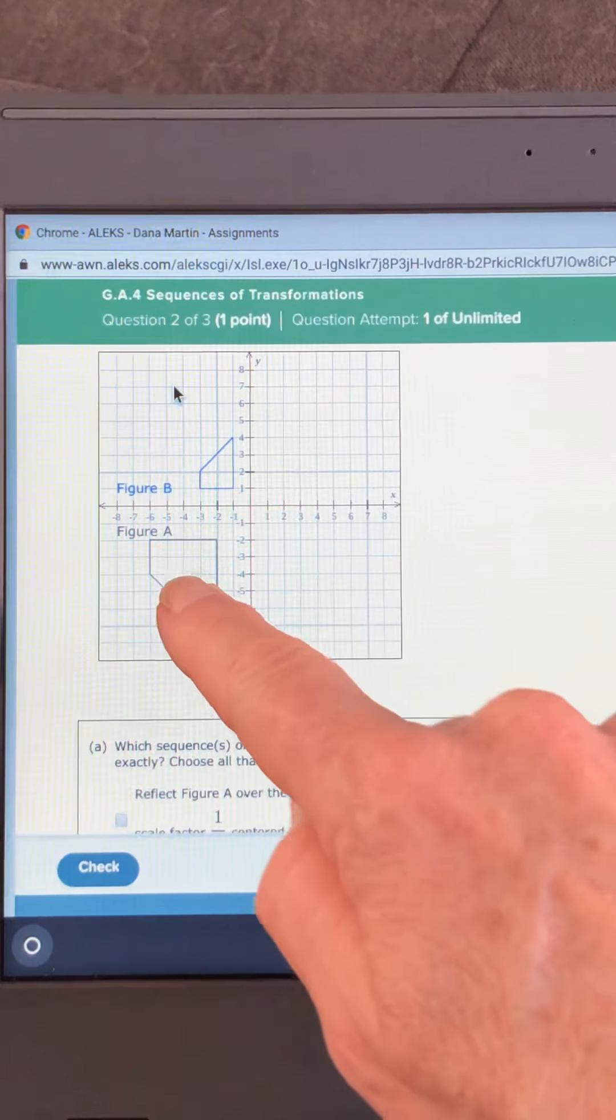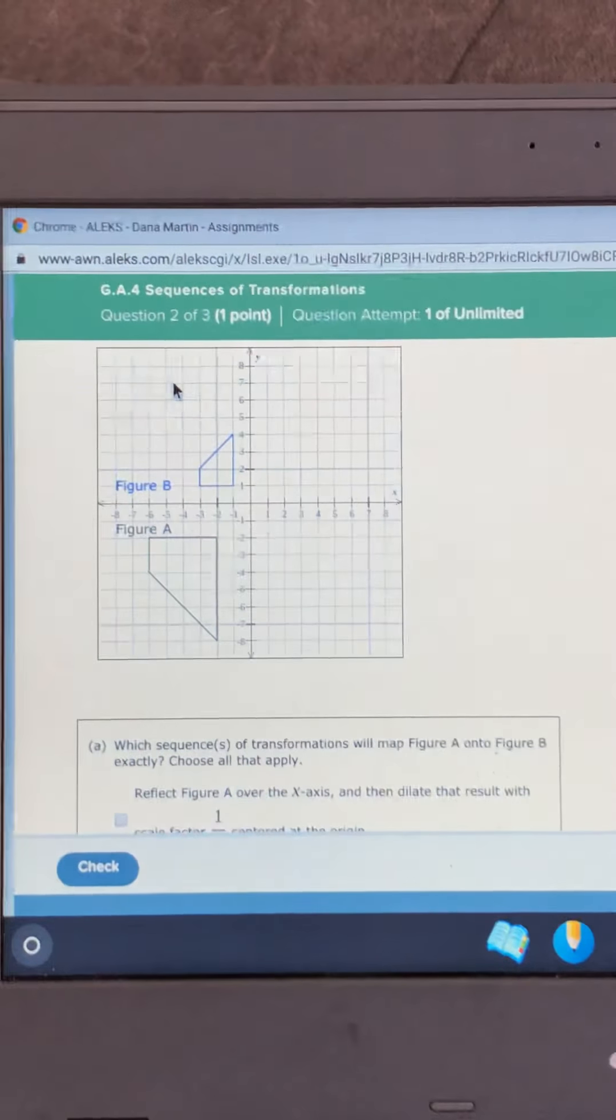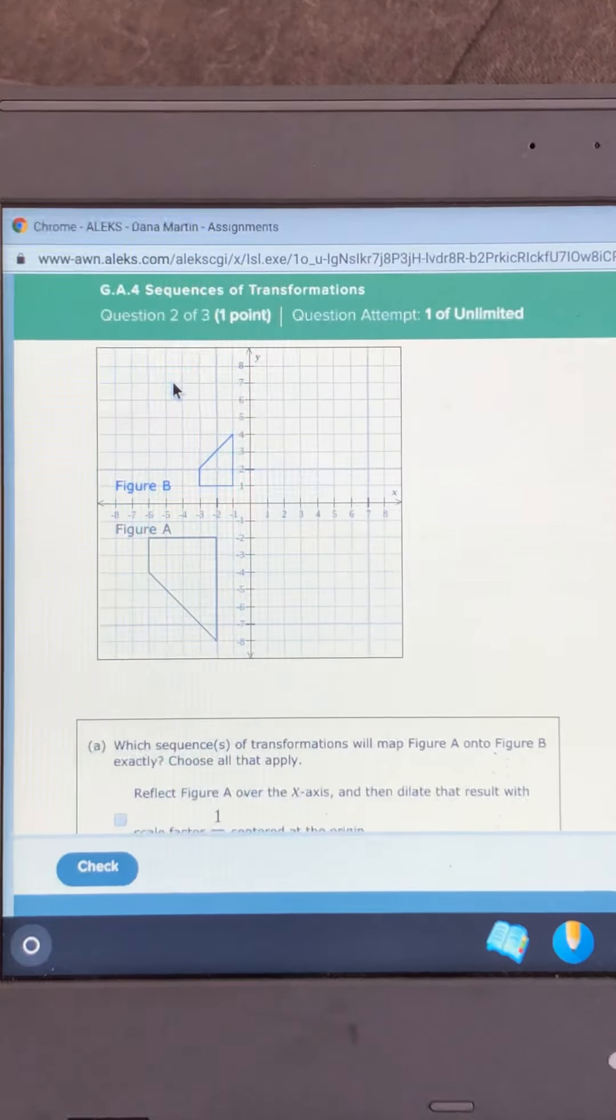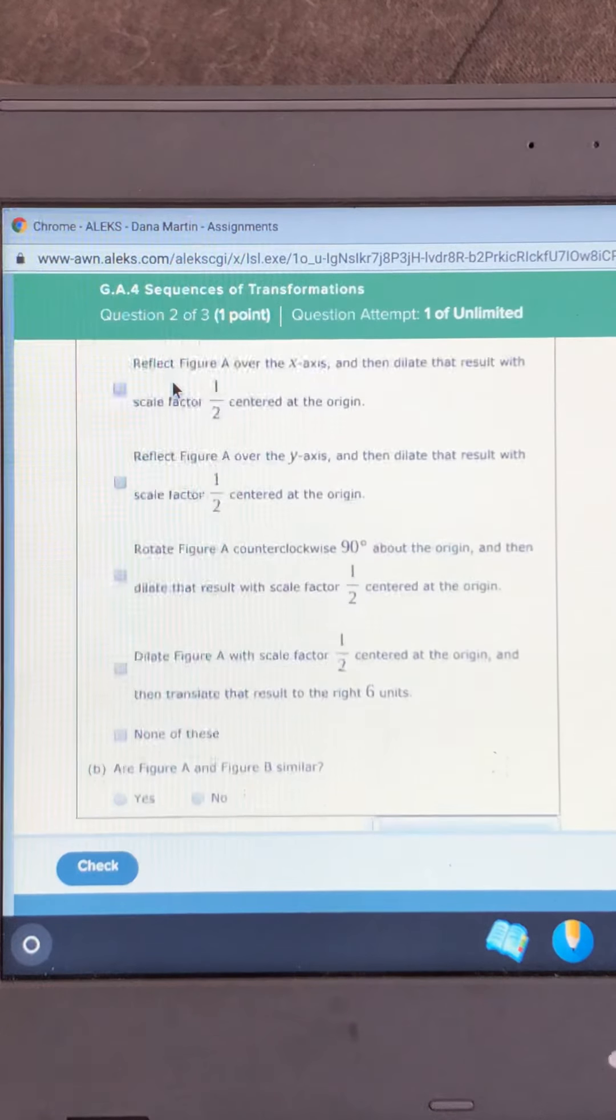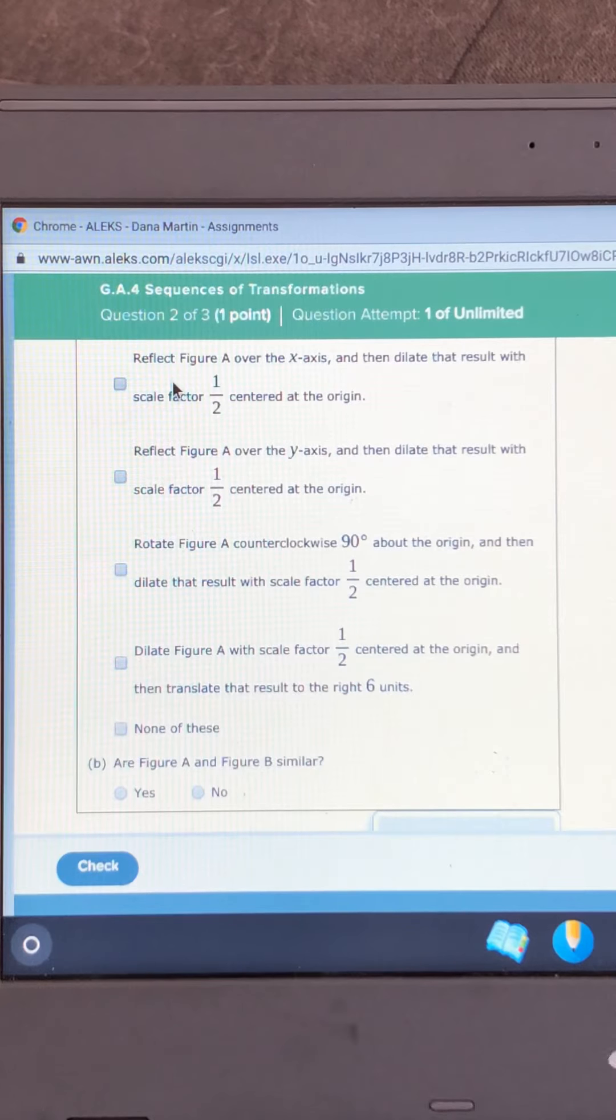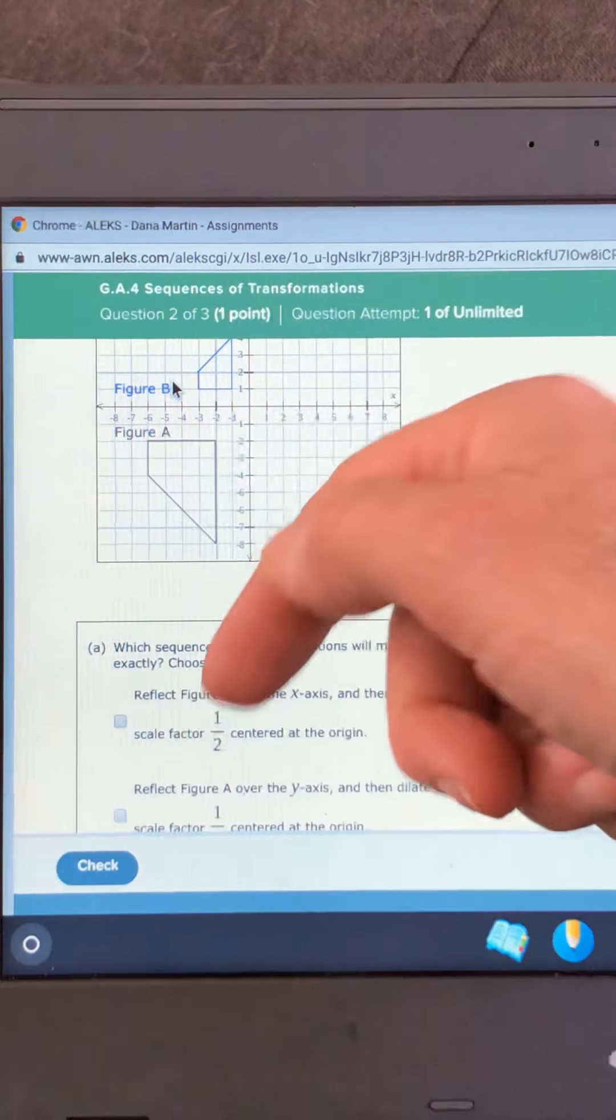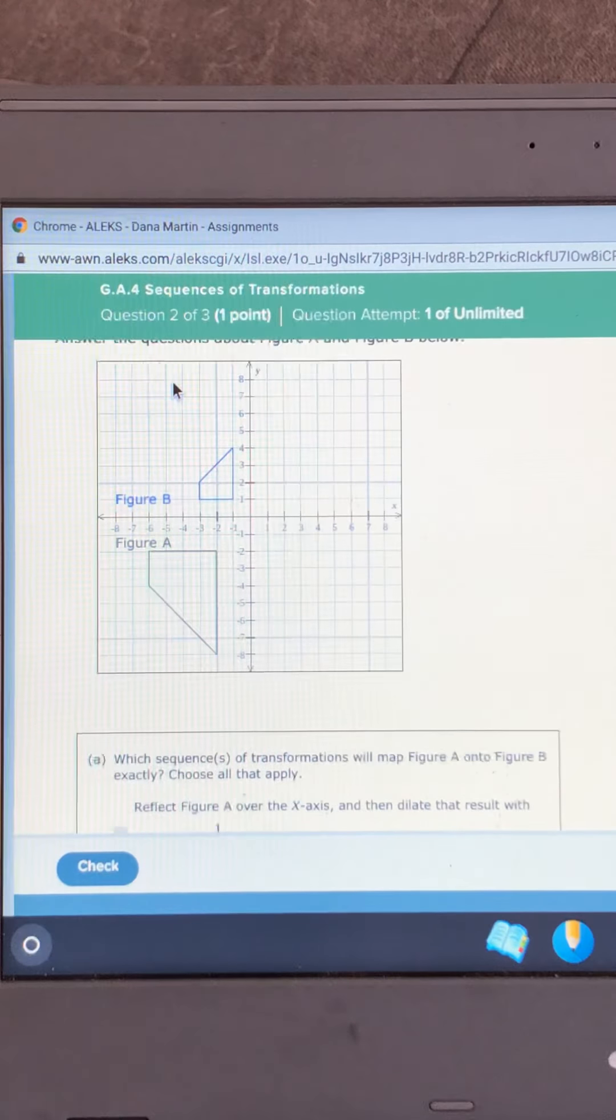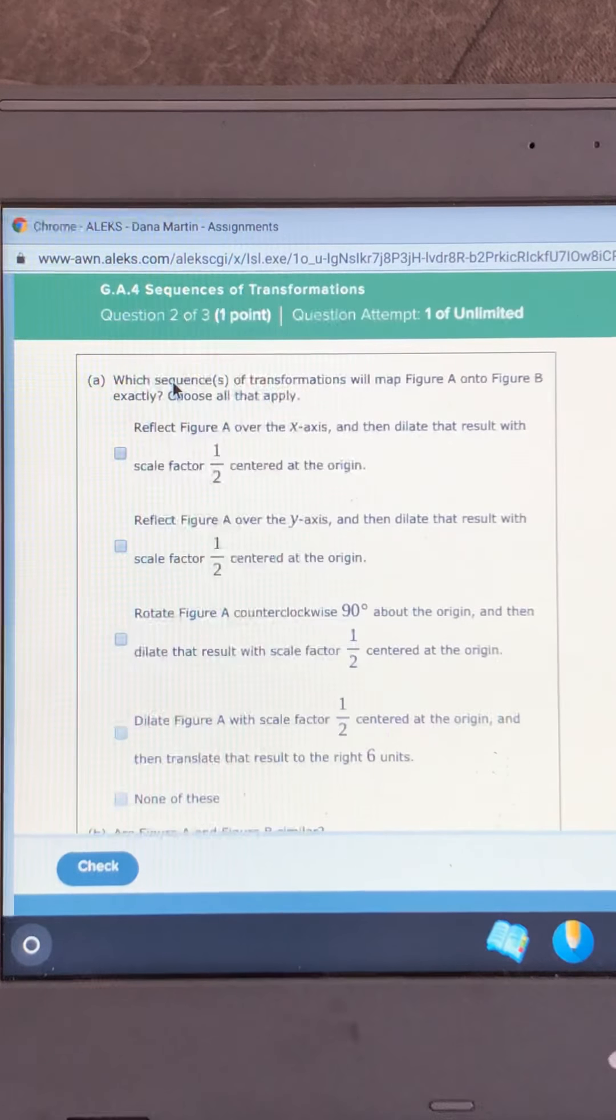And then the next one says rotate counterclockwise 90 degrees and then dilate. So rotating this 90 degrees counterclockwise. So it ended up over here. Nope. If you go counterclockwise you get further away. Or dilate it with one half and then translate it up six. Well that means it would still be facing upside down looking like the state of Nevada. So nope. It's not that.